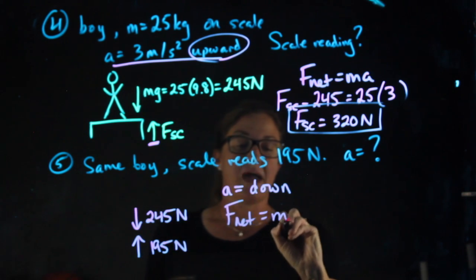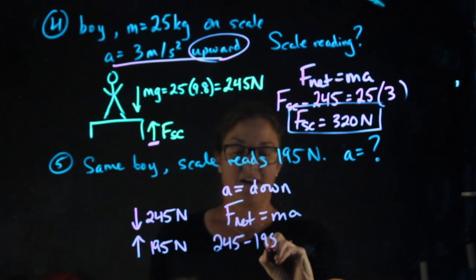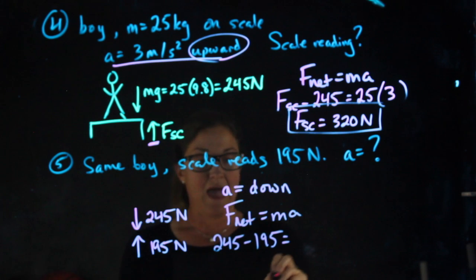F net equals ma. 245 minus 195 equals ma.